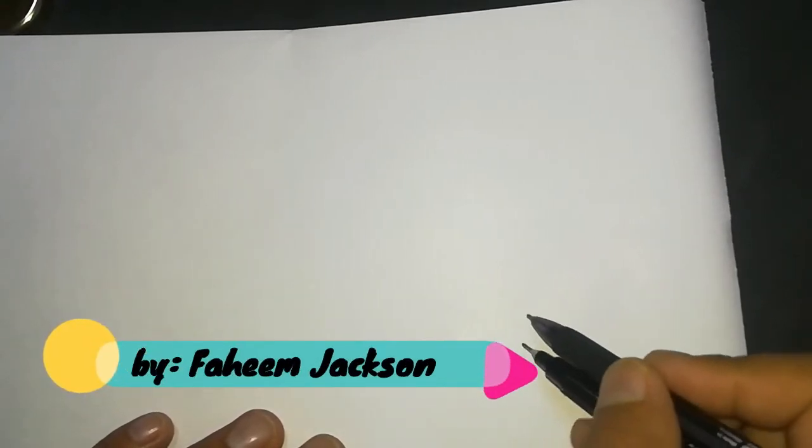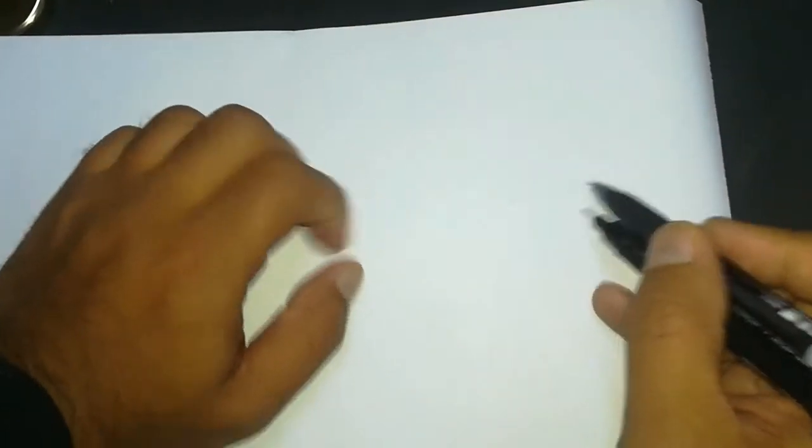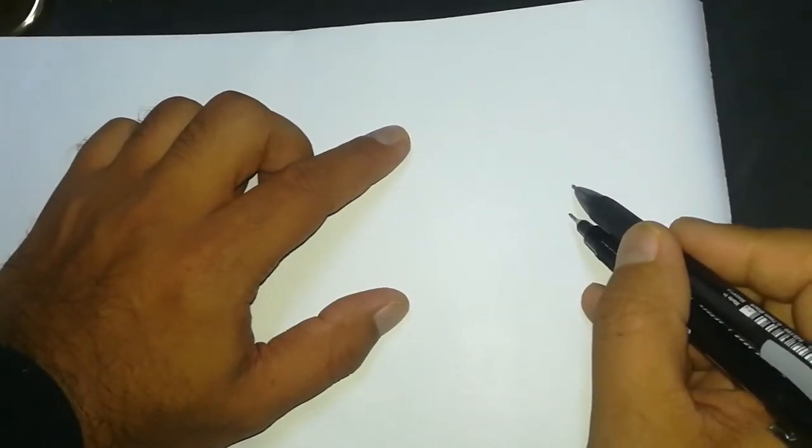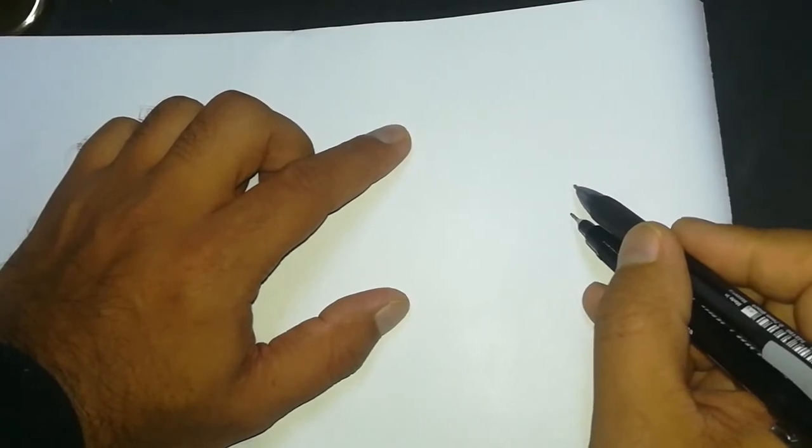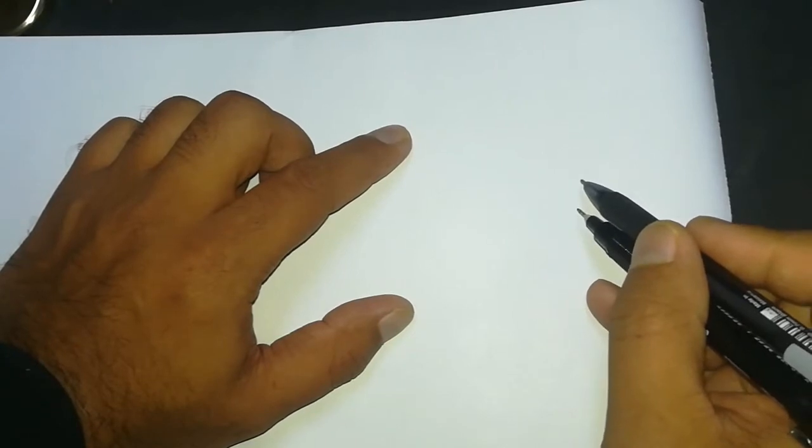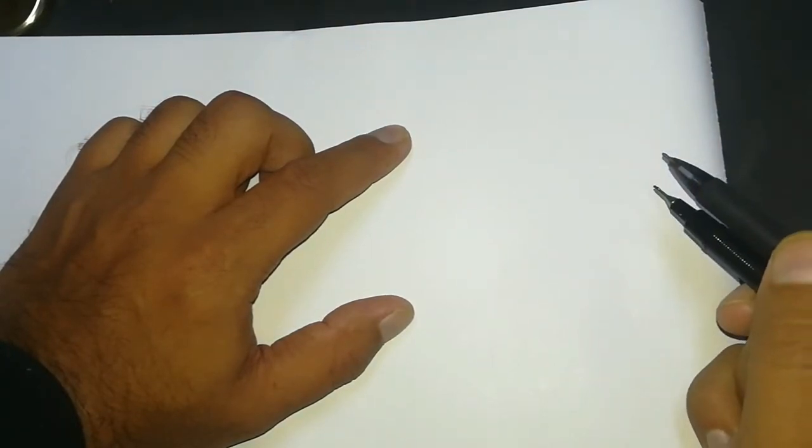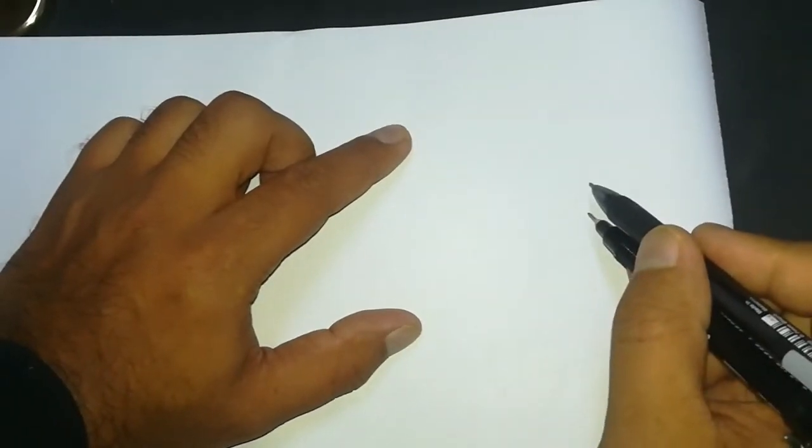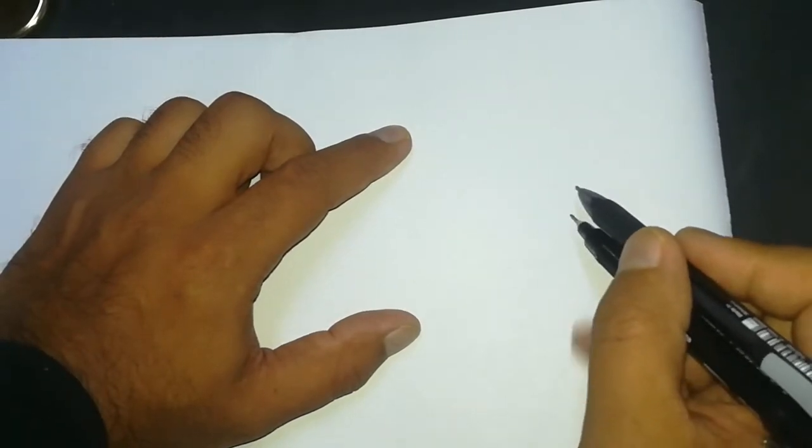Assalamualaikum, Bismillahirrahmanirrahim. We did the name of Allah in our previous video. This one I'm going to show you how to write Ar-Rahman. As we know, Ar-Rahman is the first name which Allah describes himself in the beginning of the Quran, after he says Bismillahirrahmanirrahim, or in the basmala actually. Bismillahirrahmanirrahim, Allah Ar-Rahman Ar-Rahim. So let's do it.